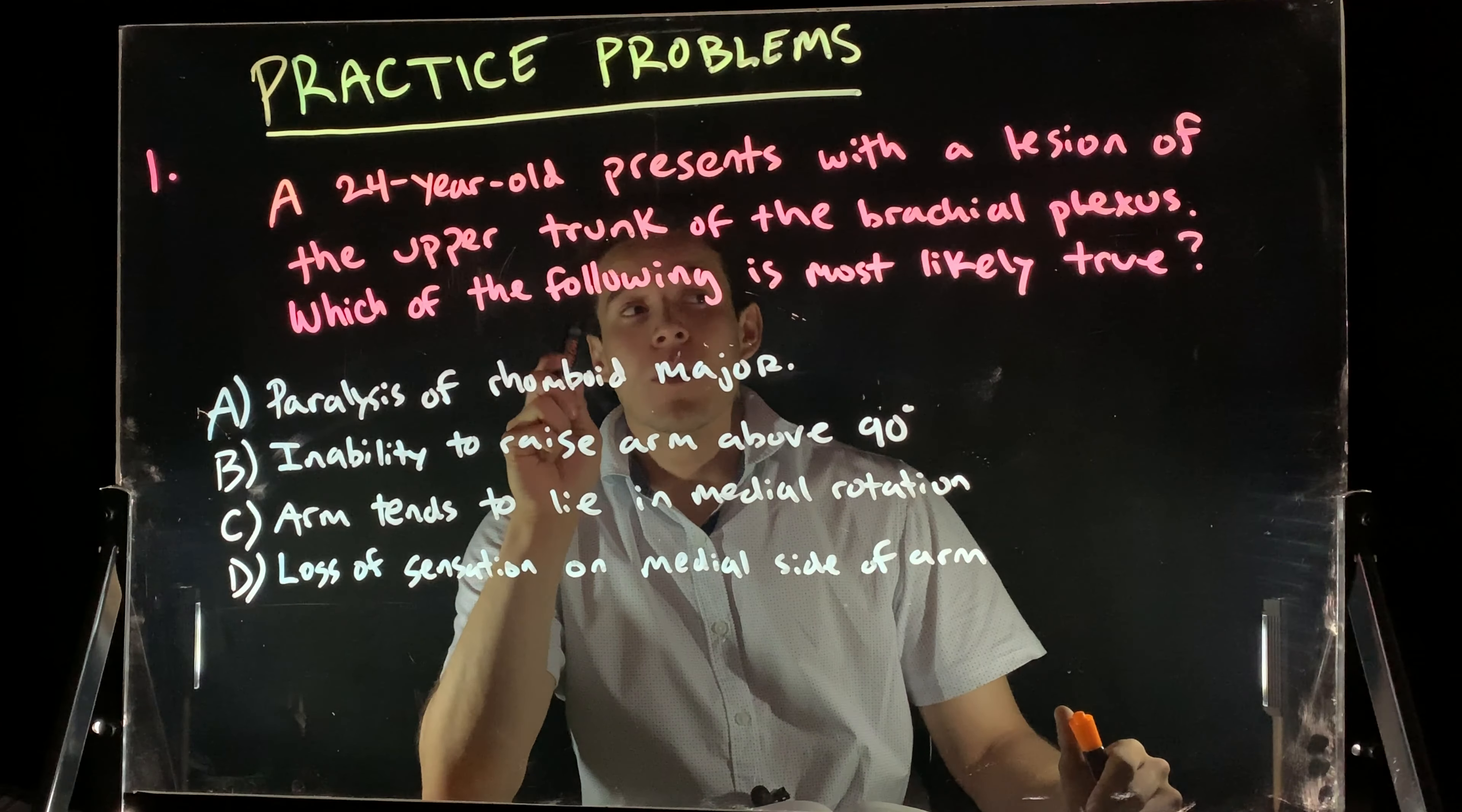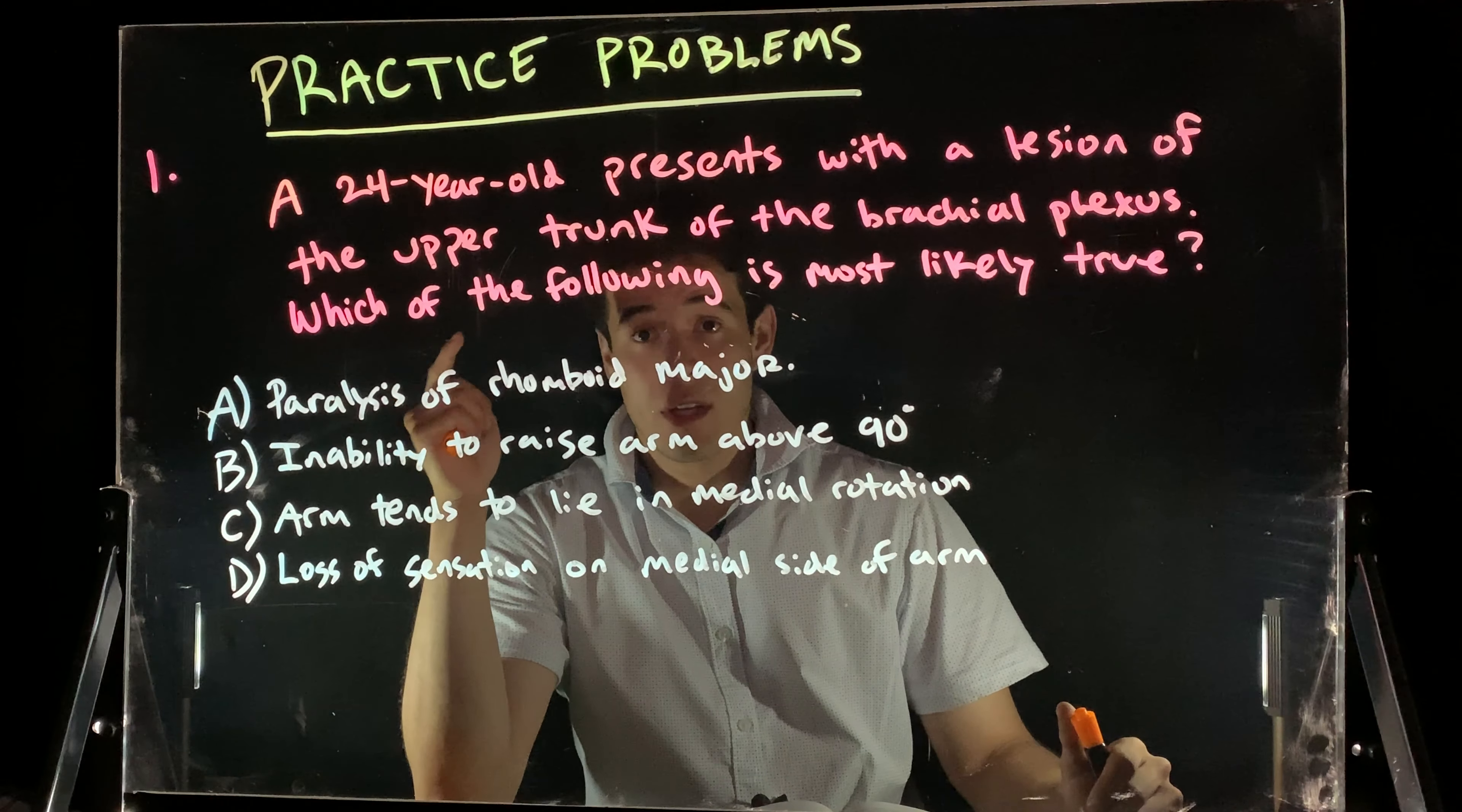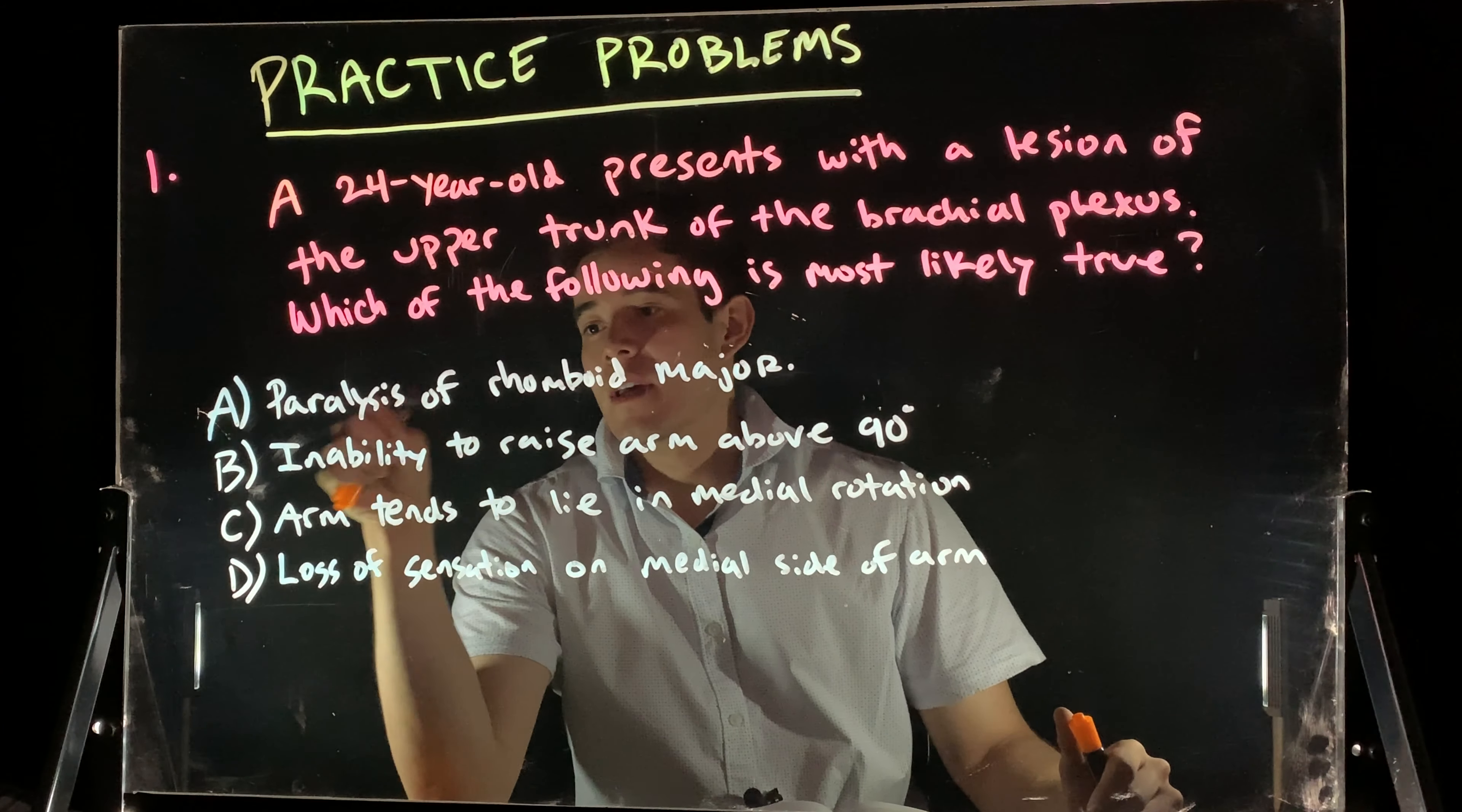So, she has a problem with her upper trunk. We're keeping in mind the different trunks, right? We have roots, trunks, divisions, the cords, and then the different branches.